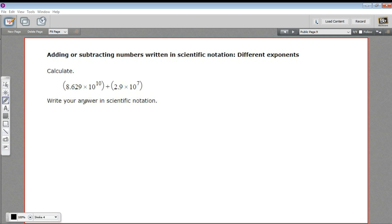Well, I think one way to approach this is to try to write one of these with a power that's the same as the other. And I'm going to do that by looking at this first one, this 8.629 times 10 to the 10th. I can write that as 10 to the third times 10 to the seventh.